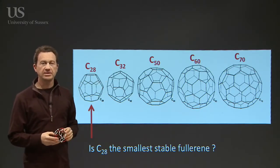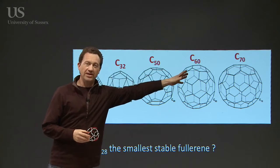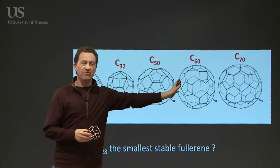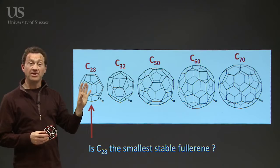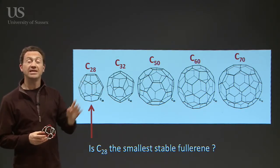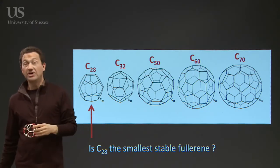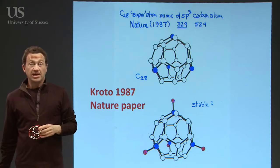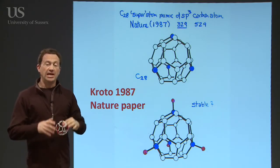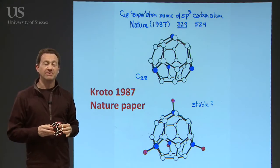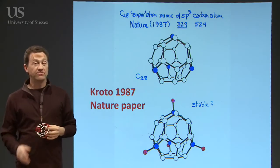These are the smaller fullerenes. You've got C70, the rugby ball one. You've got the buckyball football one here. You've got C50, C32, and our favourite, C28. That may be the smallest stable caged fullerene. Harry Croteau wrote this paper in 1987, a landmark paper looking at the possibilities of this wonderful molecule.